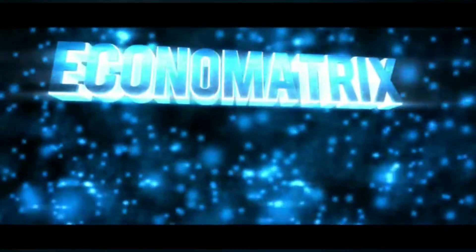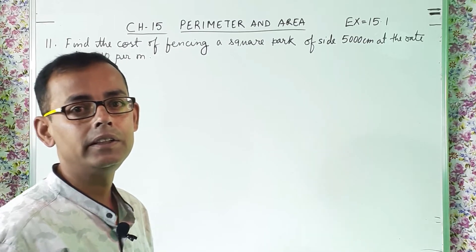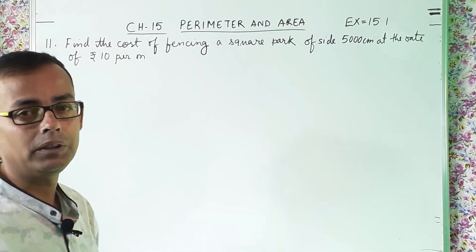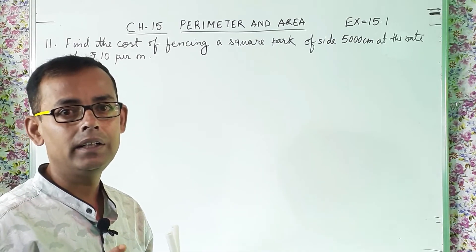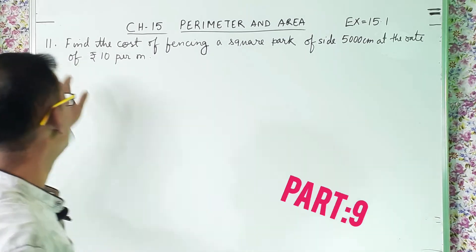Hi guys, I am Surajit and you are watching my YouTube channel Econometrics Day. Today we are going to study Class 6 Mathematics. We are going to study Chapter 15 Perimeter and Area, and this is a continuation of this chapter. Today's part is Part 9, Exercise 15.1, and today we are going to solve question number 11.